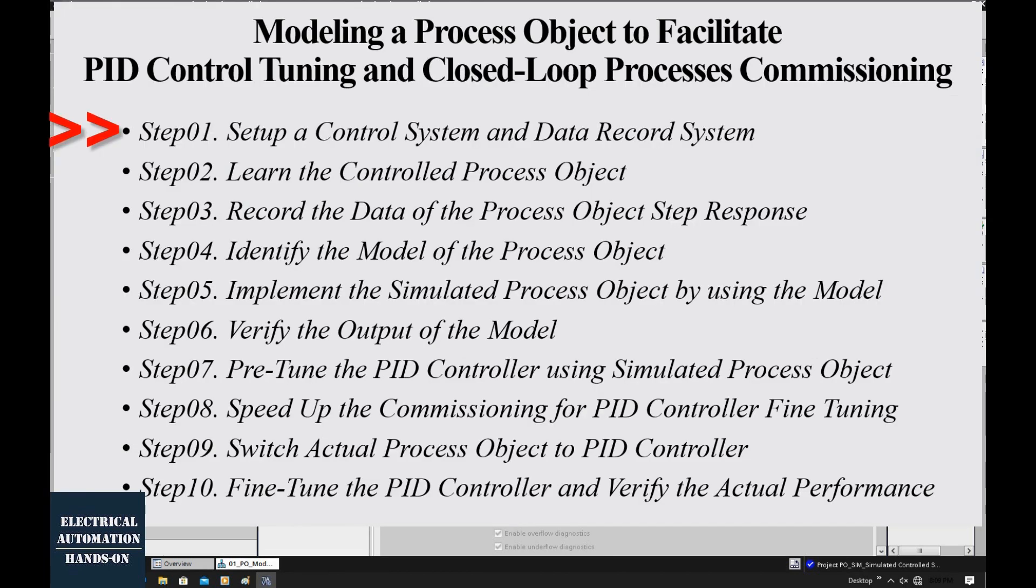Let's do a wrap-up. In the first step, we need to set up the process object system and the controller system. You need to set up the analog input with sensors to get signals from the process object and the analog output to control the actuator. Your monitoring system also needs data trend and data record functions. After you set up the system, let's shift to the next step.